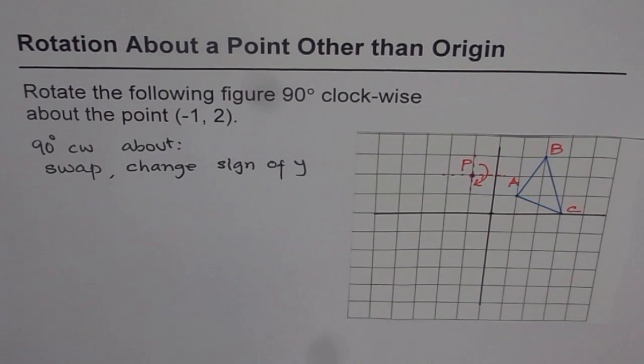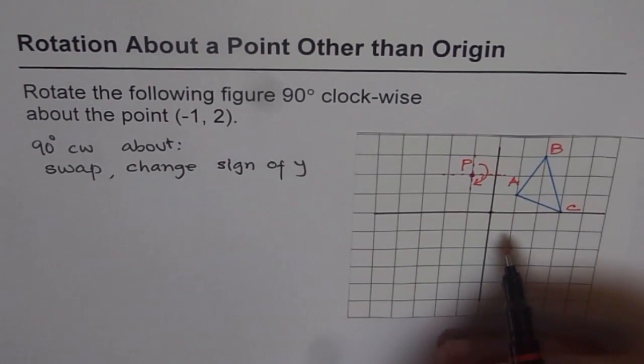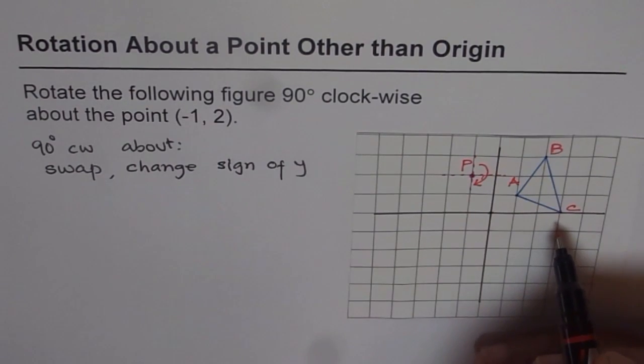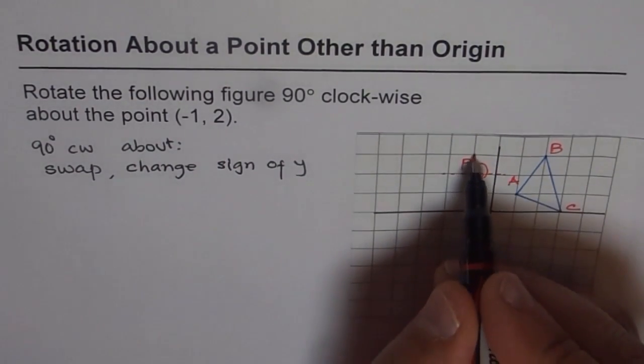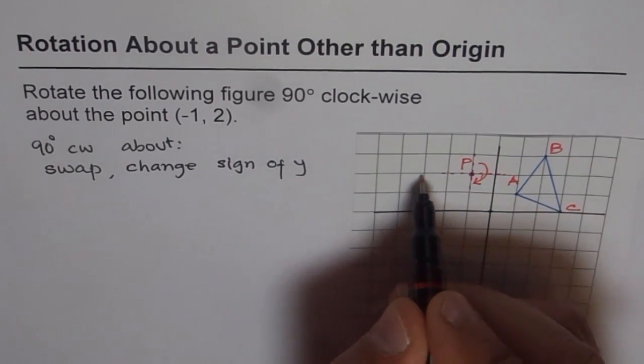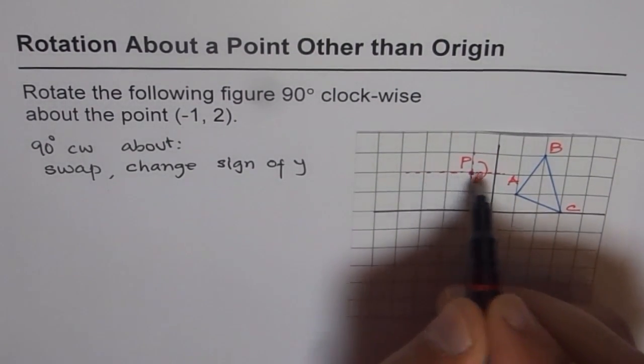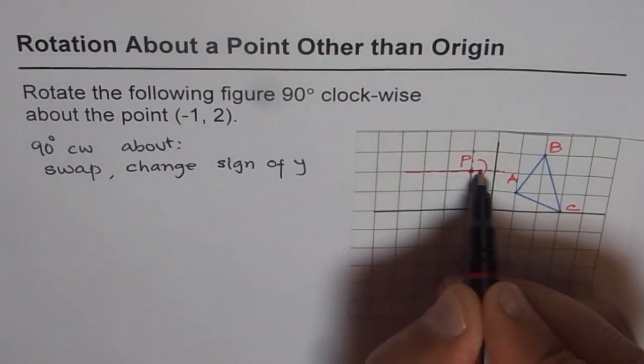One way is to change the origin, right? So what we will do is we will kind of make a new coordinate plane. That means with P as my origin. So let us say this is my new coordinate plane.